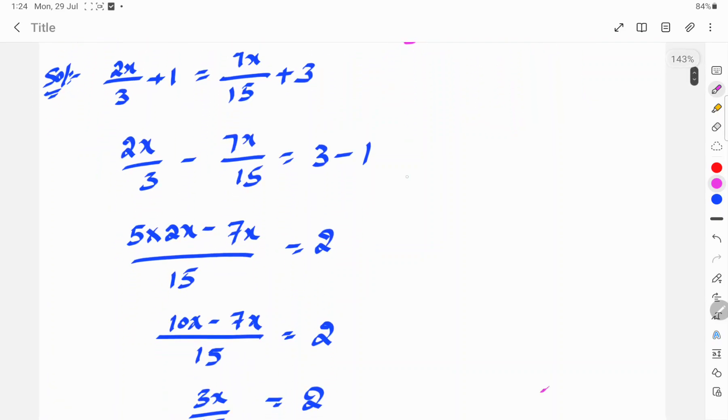For 2x by 3 and 7x by 15, we need the LCM. LCM of 3 and 15 is 15. So, 15 cancels 3 in 5 times. So, 5 into 2x minus 15 cancels 15 in 1 time.